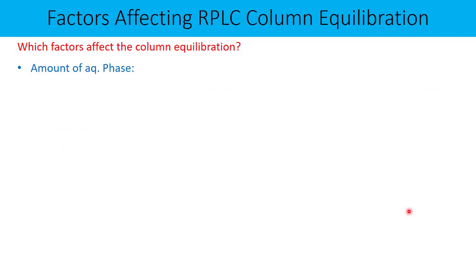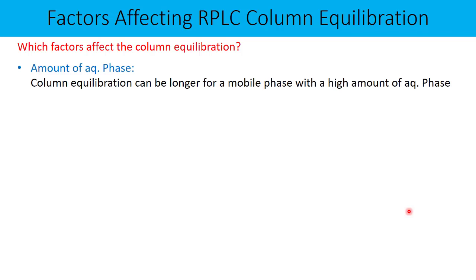The amount of aqueous phase in the mobile phase also matters. Column equilibration can be longer for a mobile phase with a high amount of aqueous phase. In reverse phase liquid chromatography, our column is hydrophobic, so if the mobile phase contains more aqueous phase, which is polar in nature, the stationary phase actually repels water out of its pores. The more the amount of water, the more the repulsion, the less the wetting process. To wet the entire stationary phase, you may have to equilibrate the column for a longer time. This is the drawback of high aqueous mobile phases.